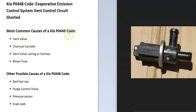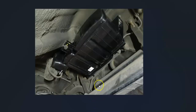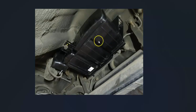The first thing to do when you get a P0448 code is to locate the vent valve. It's going to be up underneath by the gas tank somewhere, located next to what they call the charcoal canister. The valve could be a part of the charcoal canister, or it could be separate.